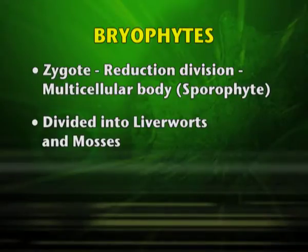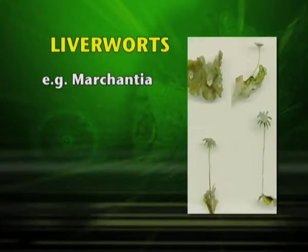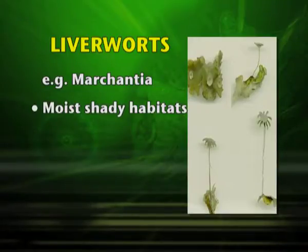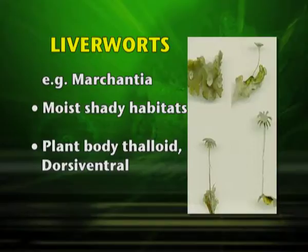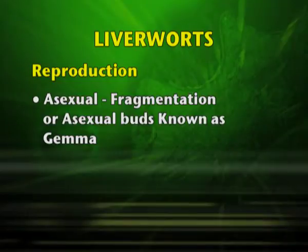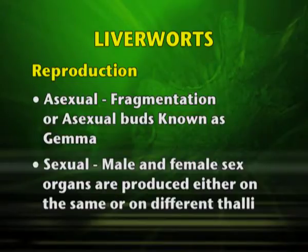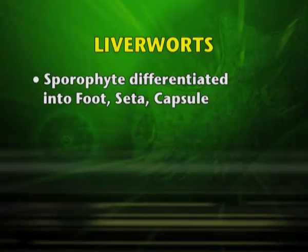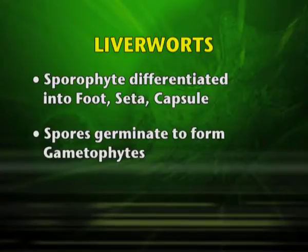Bryophytes are divided into liverworts and mosses. Marchantia comes under liverworts. They grow in moist, shady habitats and their plant body is thaloid and dorsiventral. Reproduction may be by asexual means — by fragmentation or asexual buds known as gemmae. Sexual reproduction is by male and female sex organs produced either on the same or different thalli; when on the same thallus they are homothalic, and when on different thalli, heterothalic. The sporophyte is differentiated into foot, seta, and capsule, and the spores germinate to form the gametophytes.